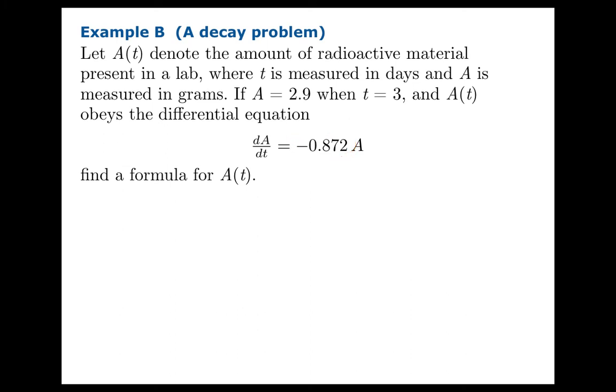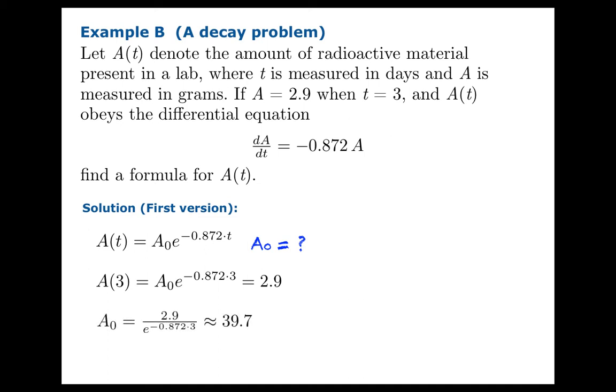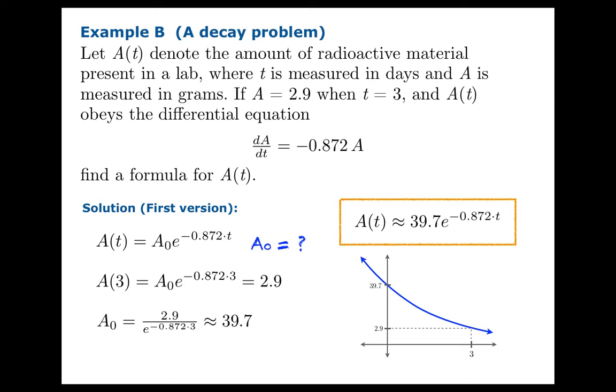So first version of the solution, we can just write out the template. Unfortunately, we don't know what the initial amount was. So we might have to work backwards to figure this out. We know that A of three is 2.9, and then we can solve for A naught and find out that the original amount was about 39.7. So our solution might look like this.